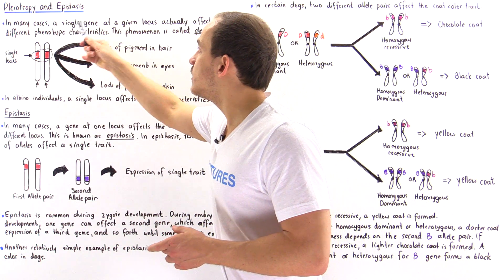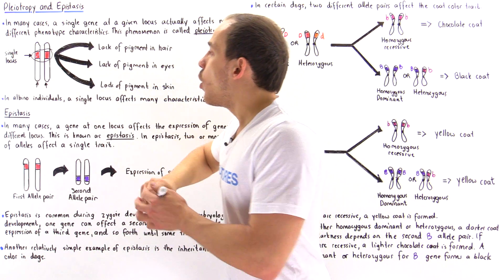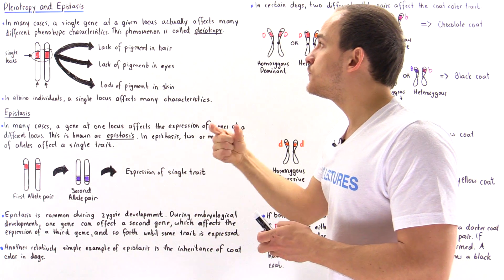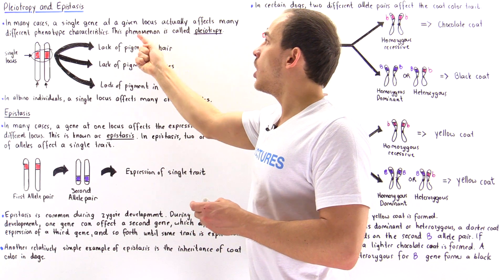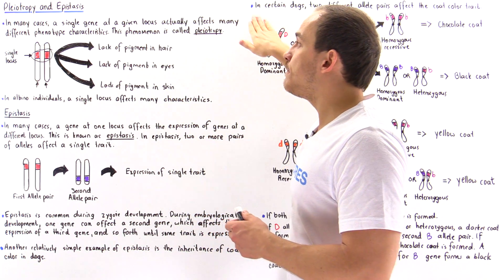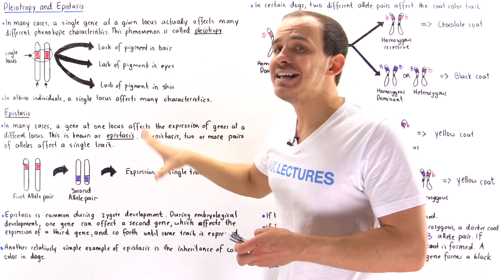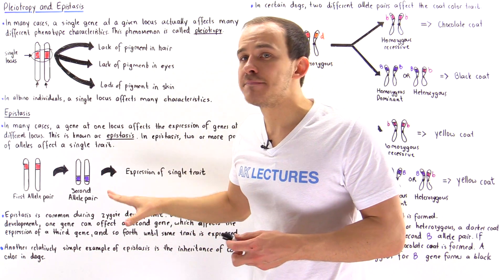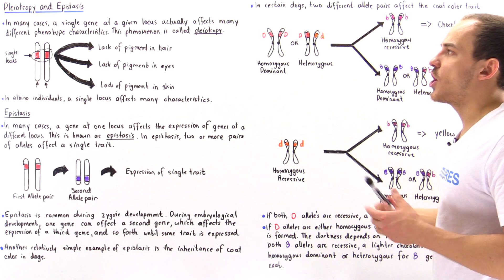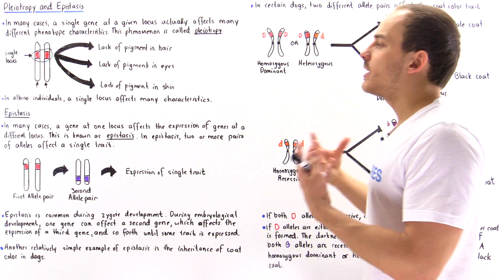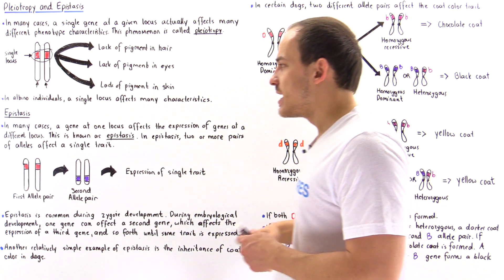It's this single locus that affects the expression of many different types of traits. So a single gene or a pair of genes on a single locus affects many different types of phenotype characteristics, and this is known as pleiotropy.